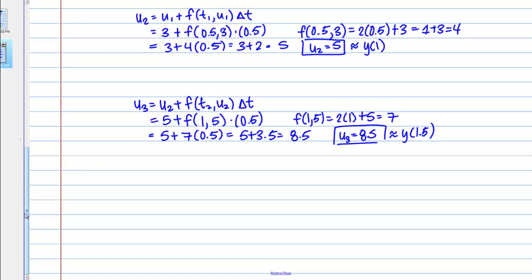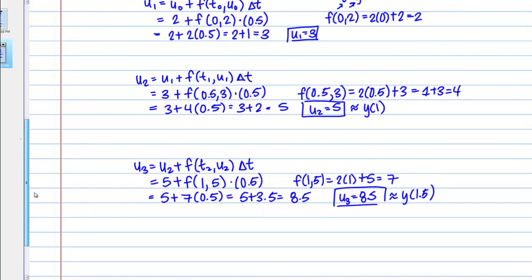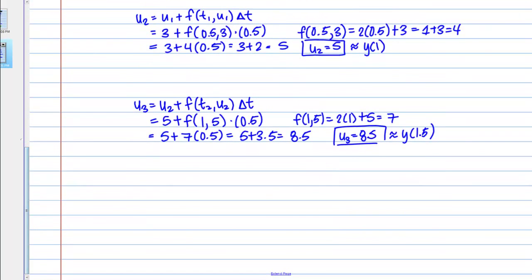This is how you use Euler's method. Of course you could continue and get as many approximations as you wanted using the same iterative process.